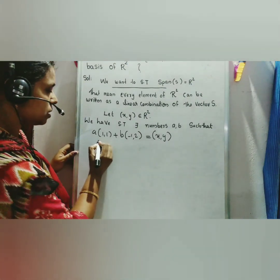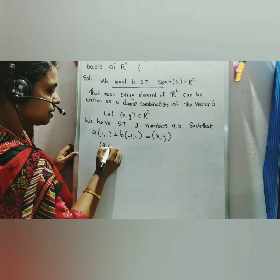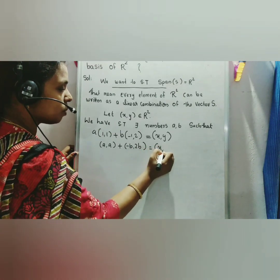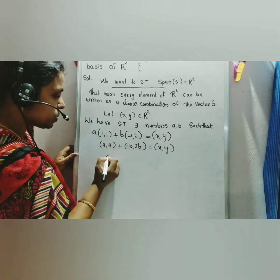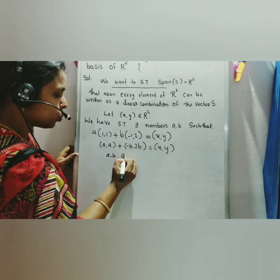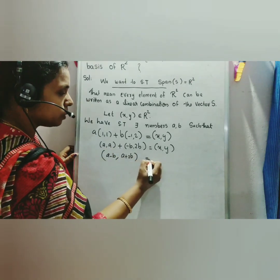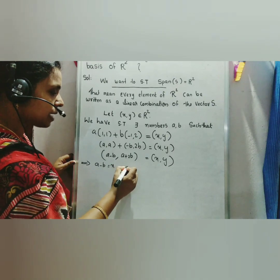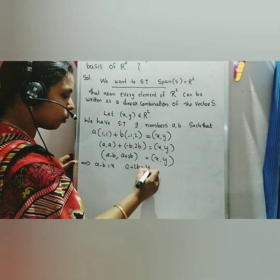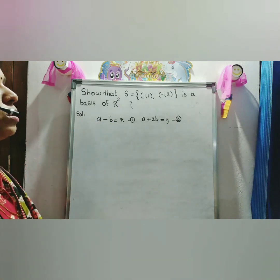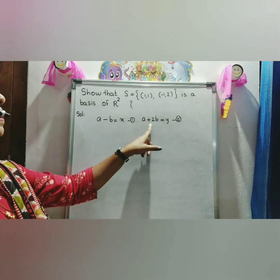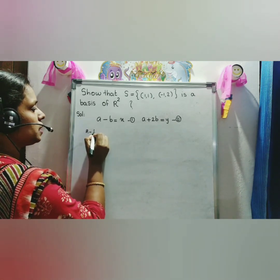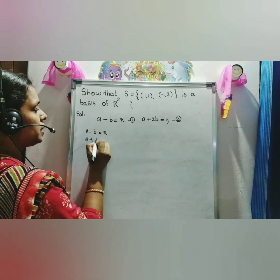We can write A·(1,1) + B·(-1,2) as (A - B, A + 2B) = (x, y). That implies A - B = x, putting as equation 1, and A + 2B = y, putting as equation 2.